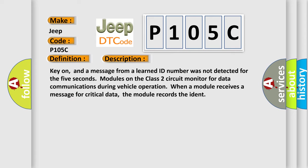Key on, and a message from a learned ID number was not detected for the 5 seconds modules on the class 2 circuit monitor for data communications during vehicle operation. When a module receives a message for critical data, the module records the ID. This diagnostic error occurs most often in these cases.